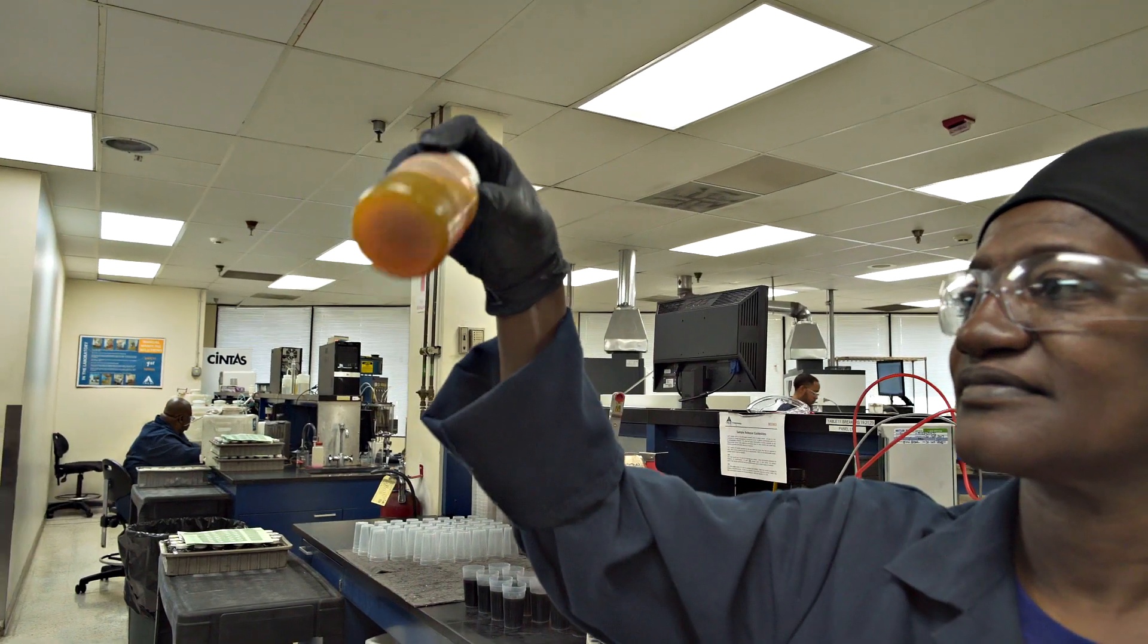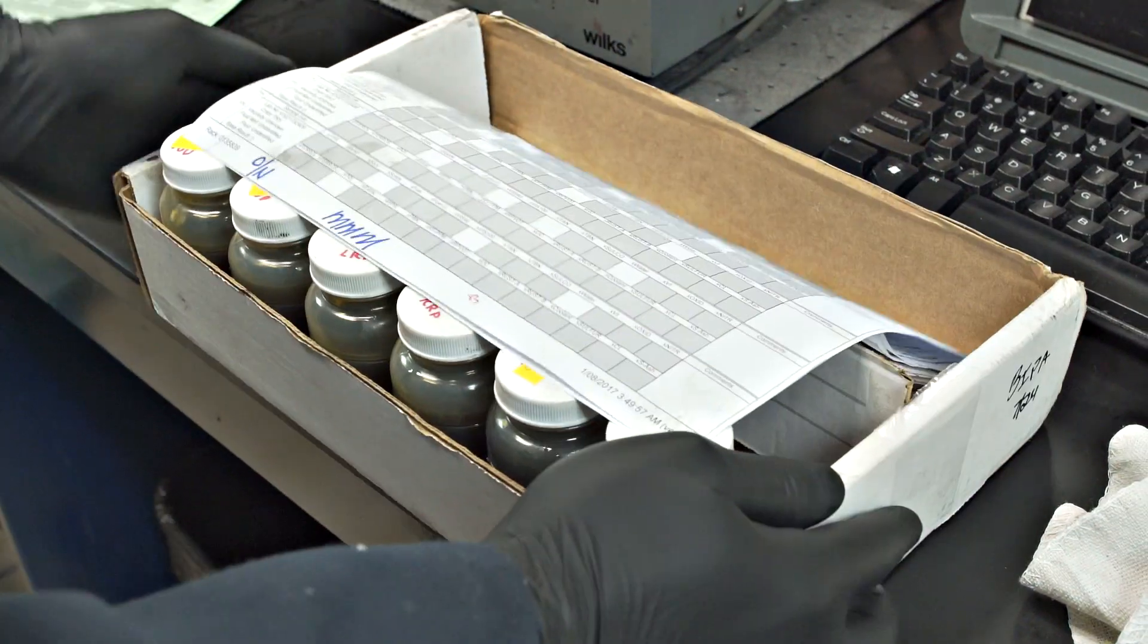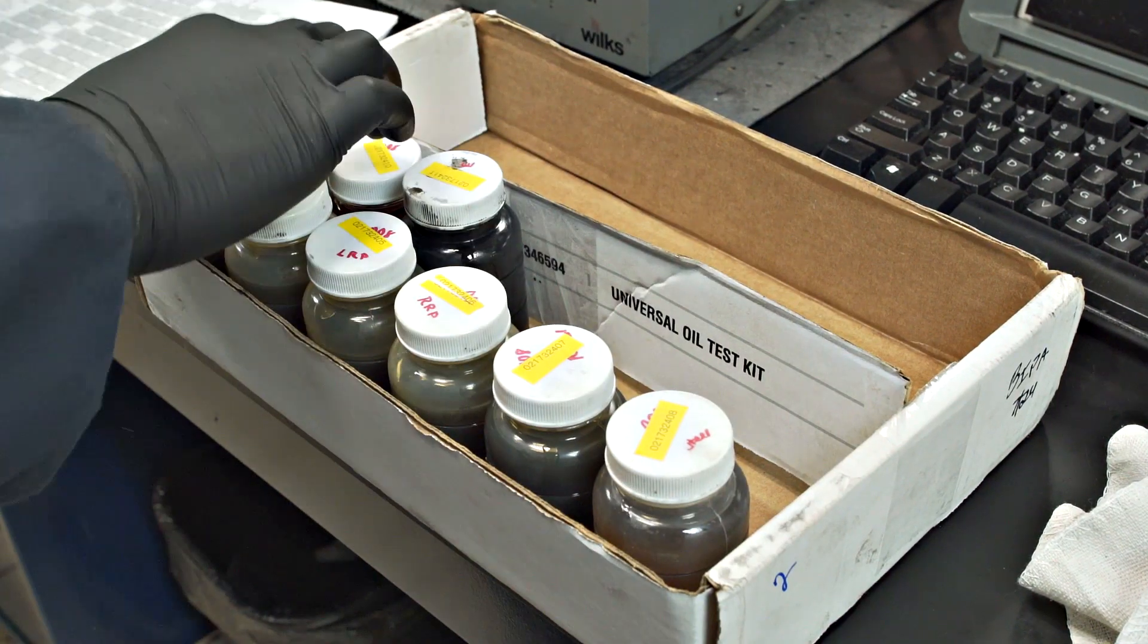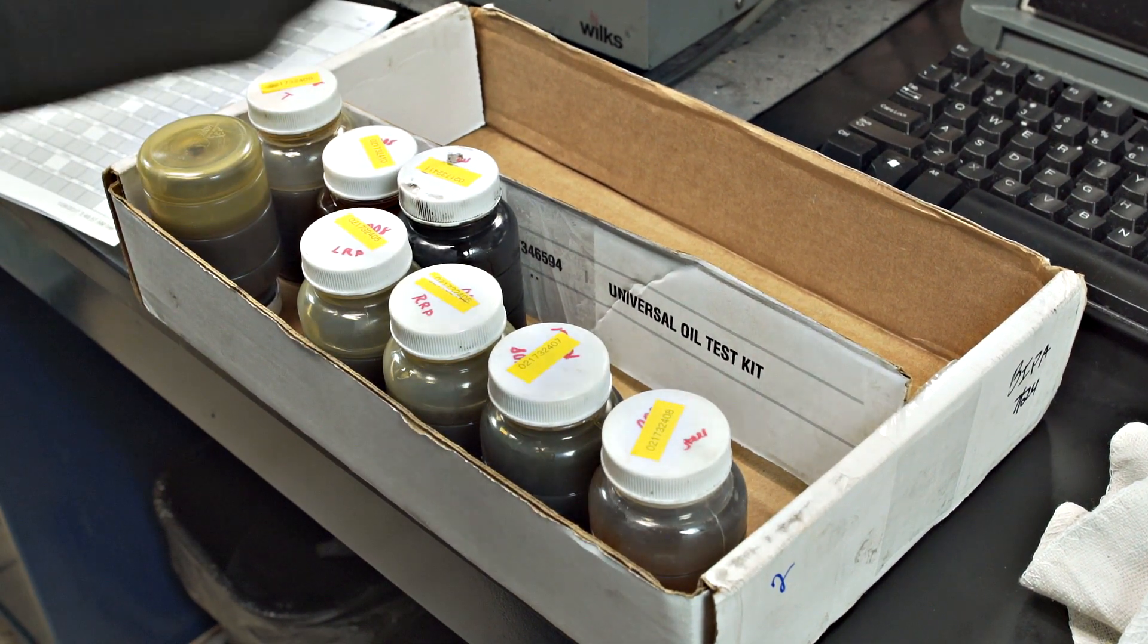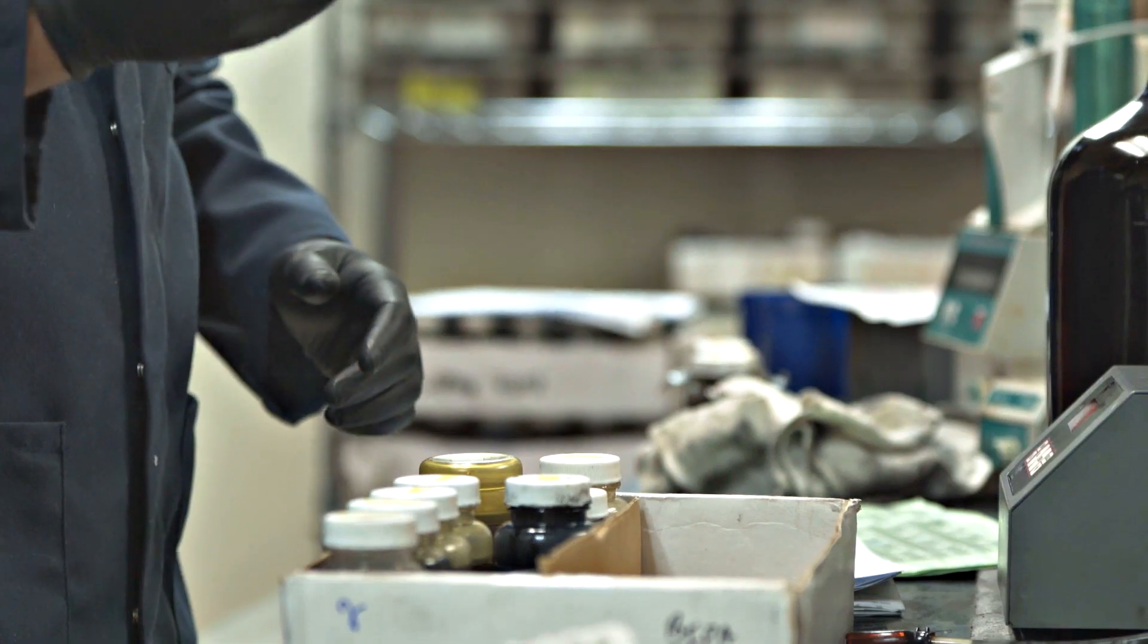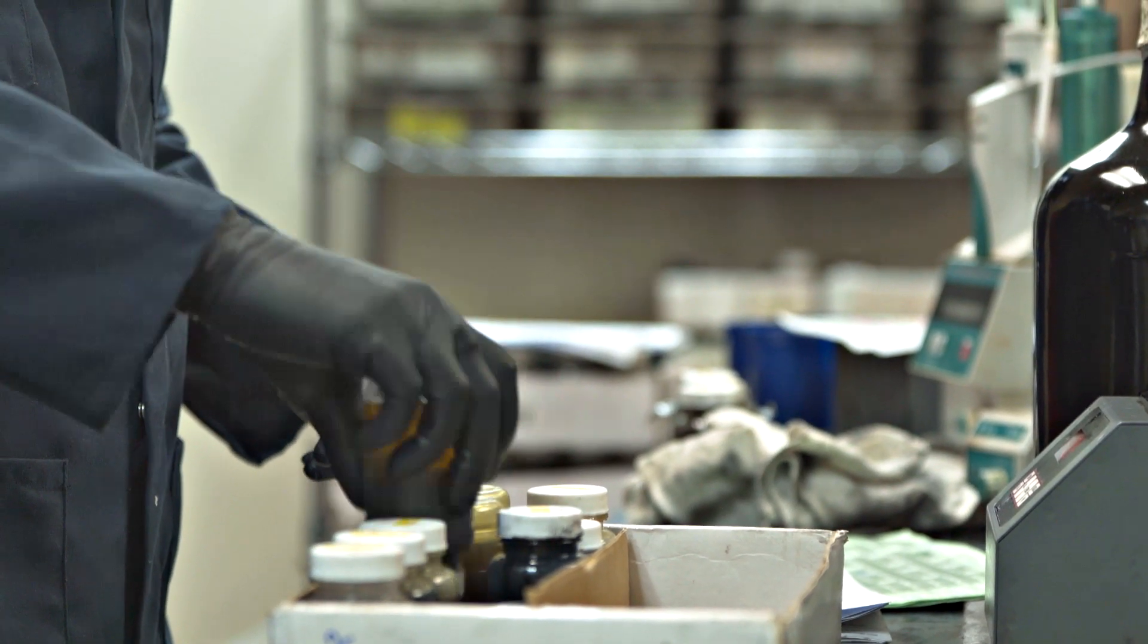Samples are visually inspected and any free water, particulate, or exception to appearance is noted. Samples are inverted and kept at laboratory temperature for a minimum of 30 minutes to ensure non-suspended material is redistributed throughout the sample. They are then staged at their first analytical station.